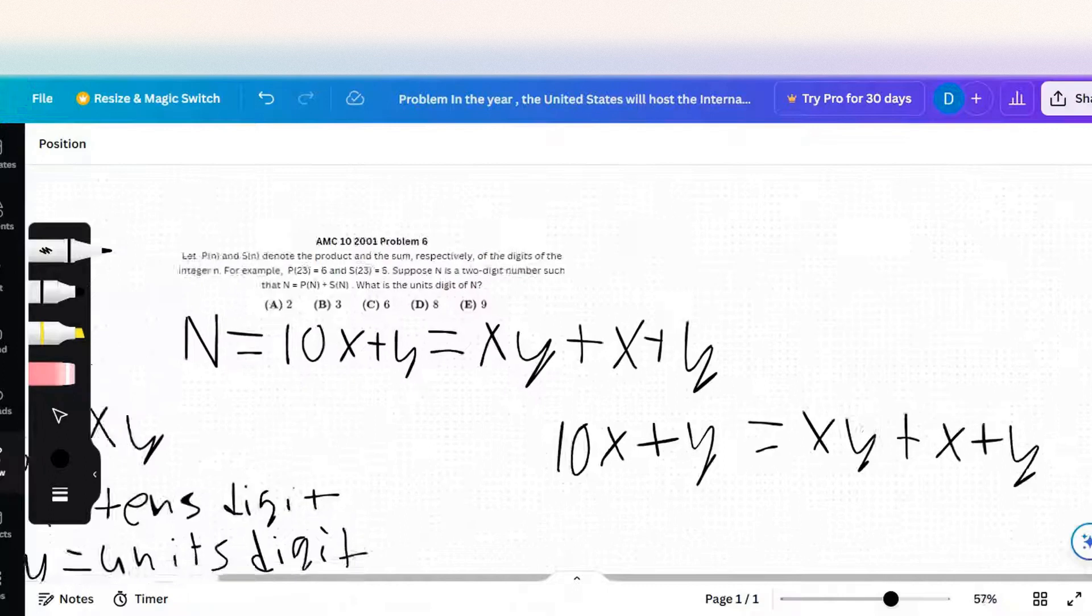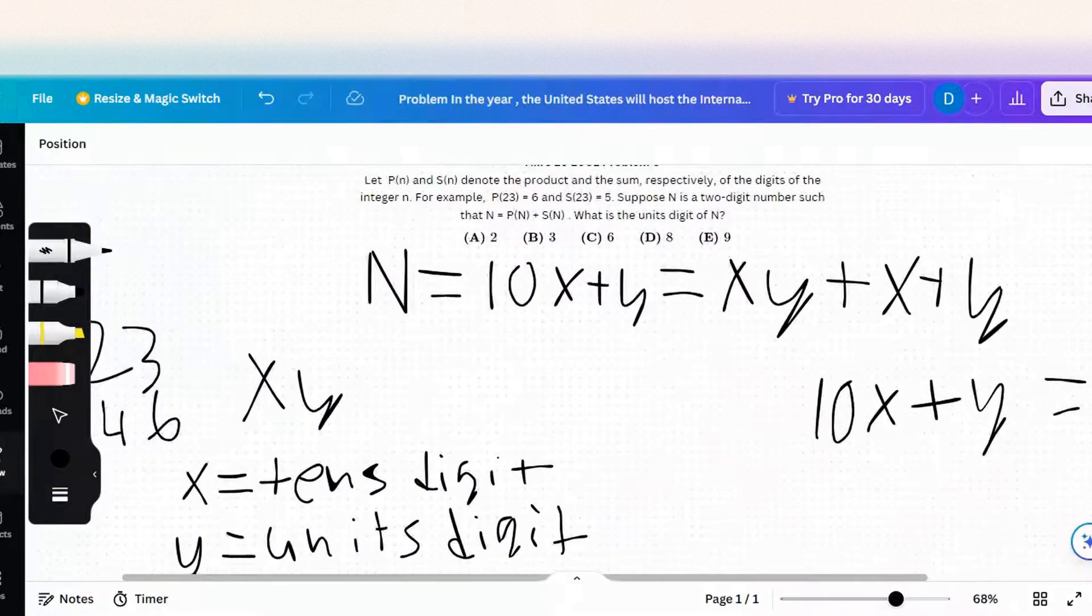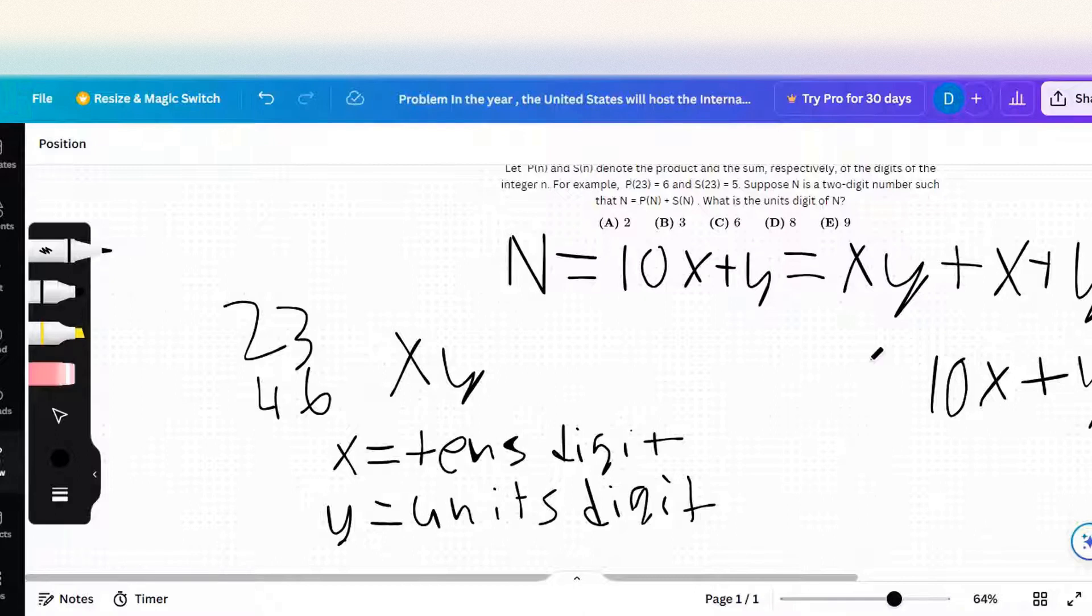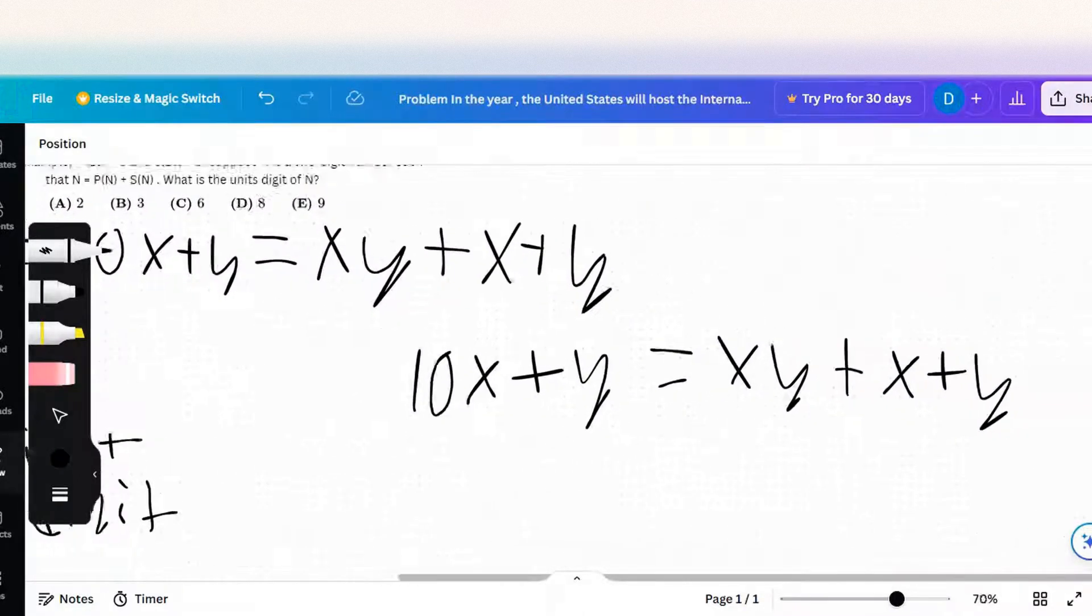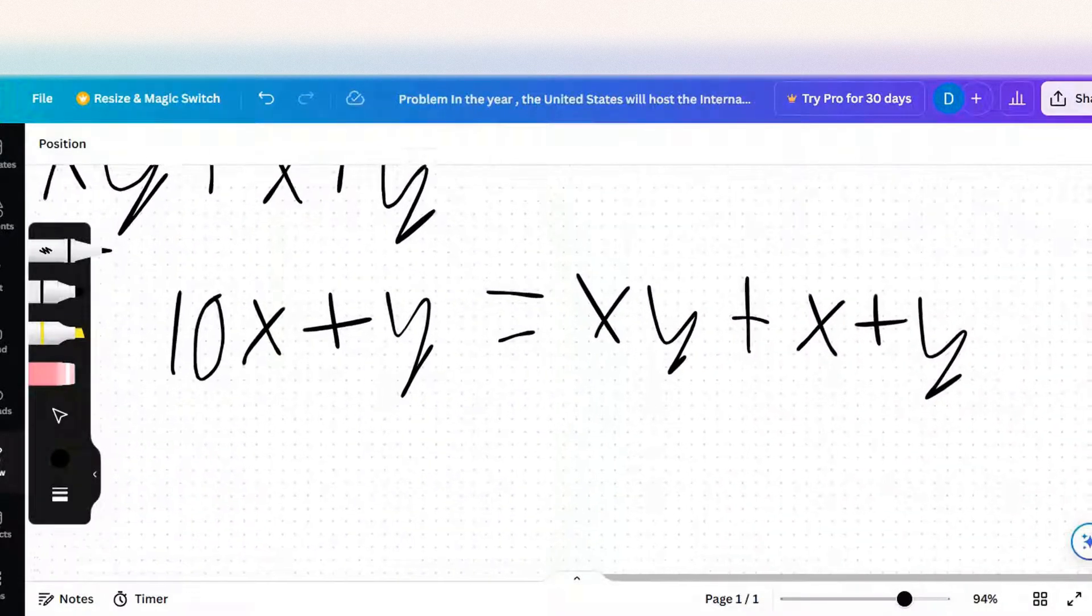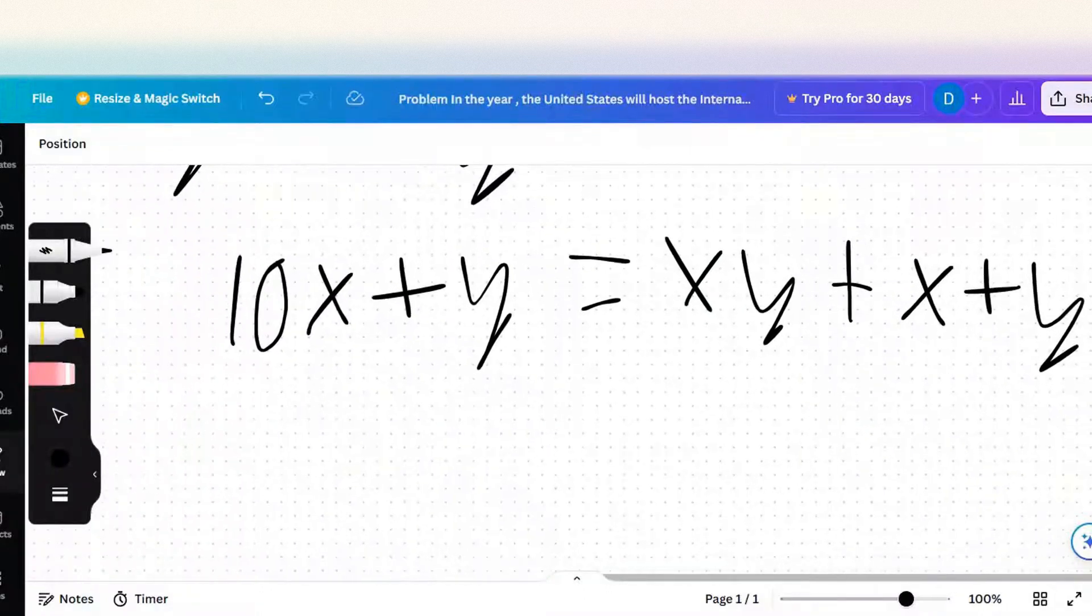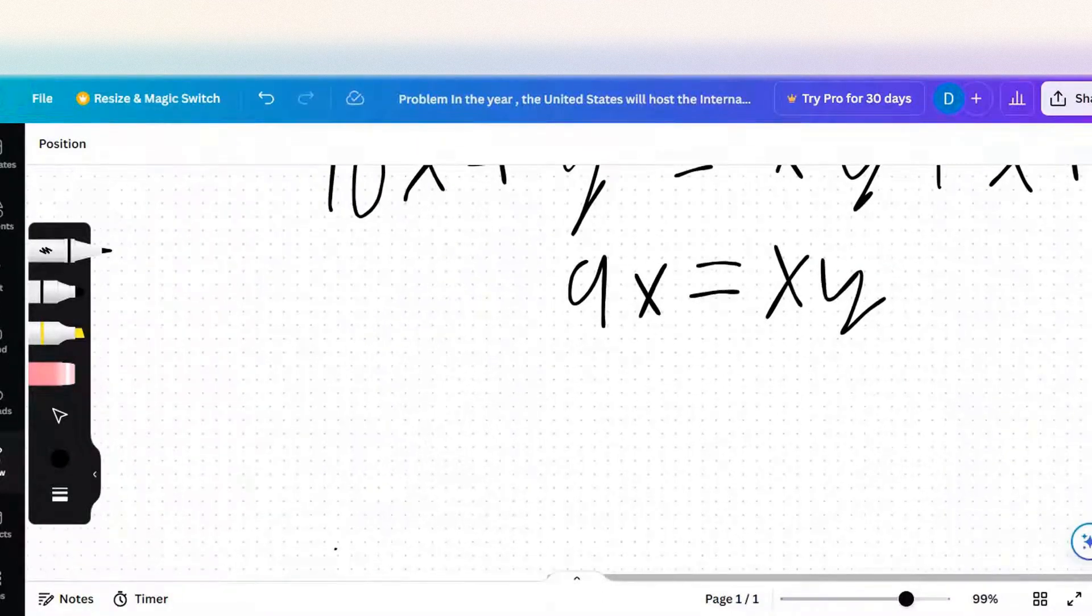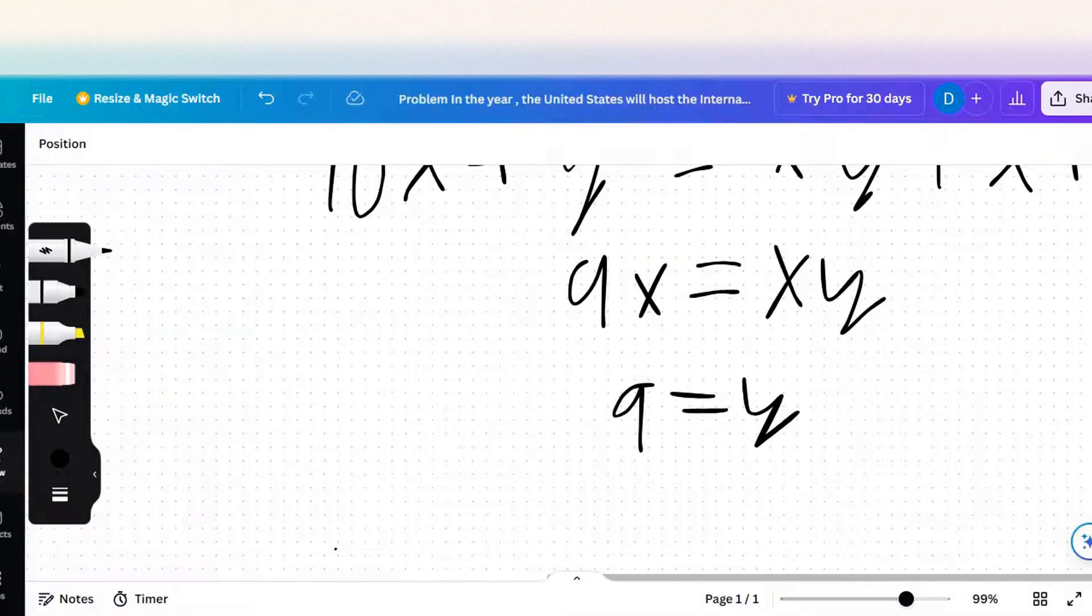We didn't do anything special, we just rewrote it. It's pretty easy to solve. Subtract x and y from both sides: 9x equals xy. Divide by x on both sides. y equals 9.